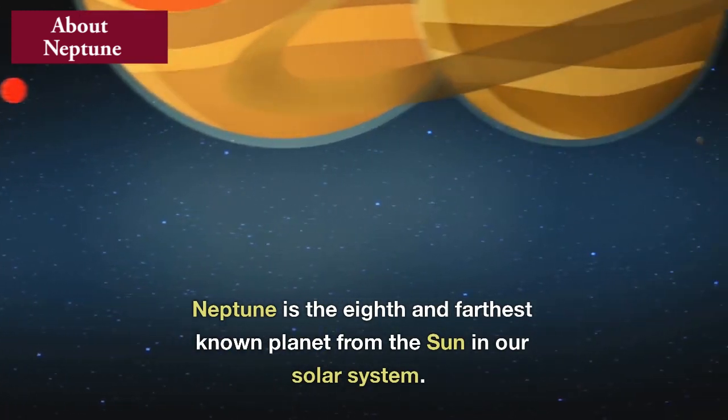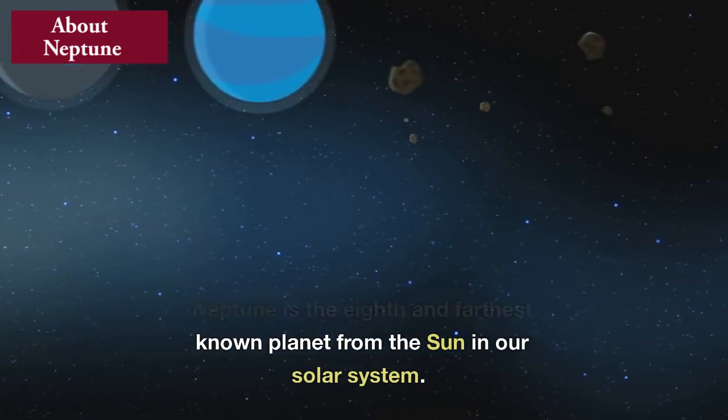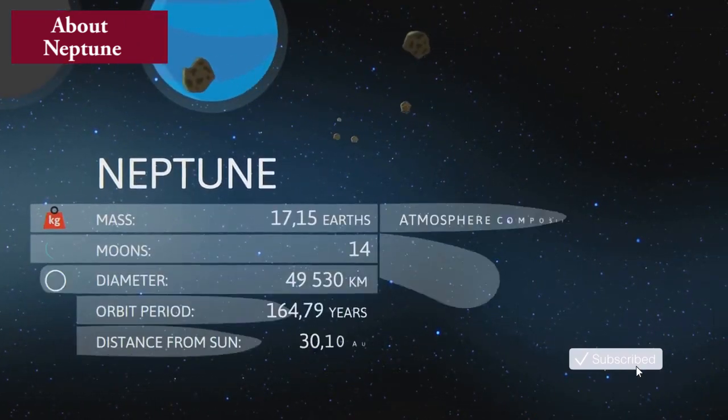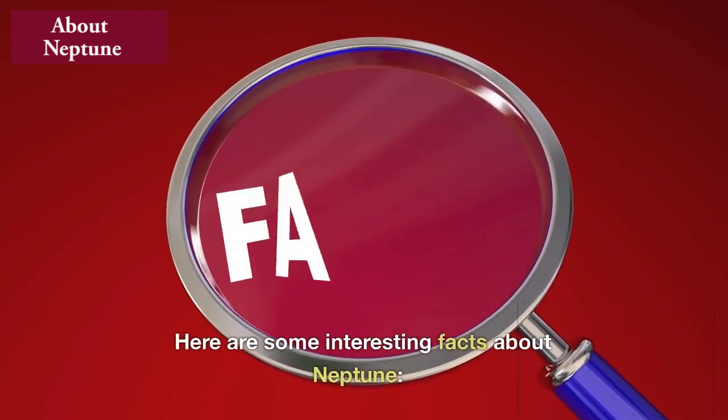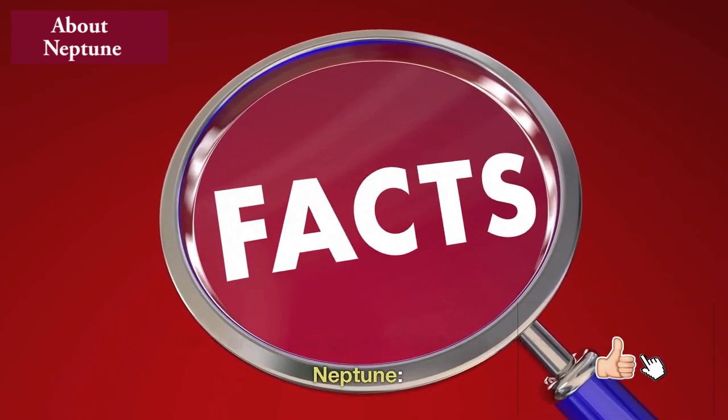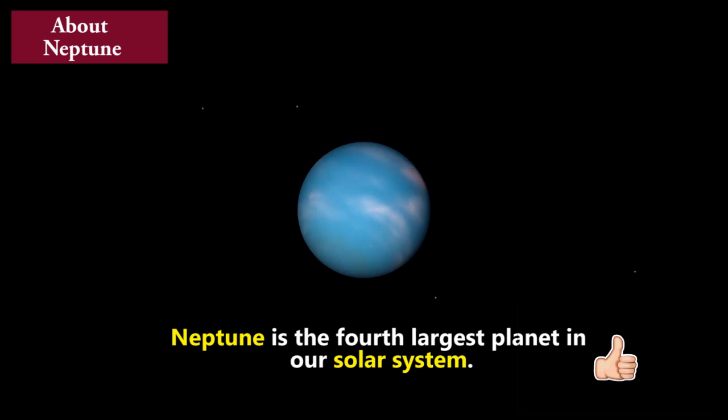Neptune is the 8th and farthest known planet from the Sun in our solar system. Here are some interesting facts about Neptune. Neptune is the fourth largest planet in our solar system.